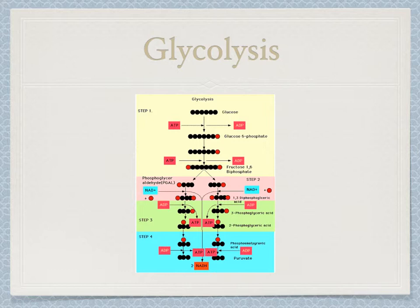This creates two stable molecules of pyruvate with a net yield of 2 ATP, 2 NADH, and 2 pyruvate, plus a byproduct of water.